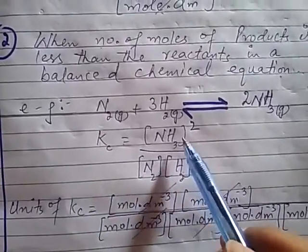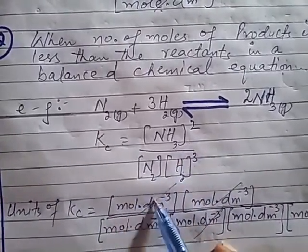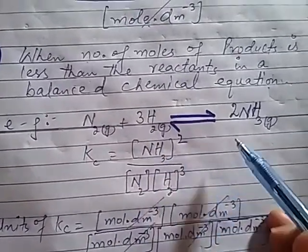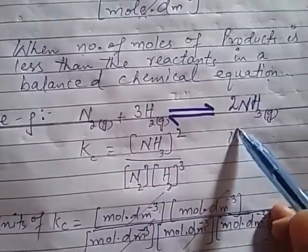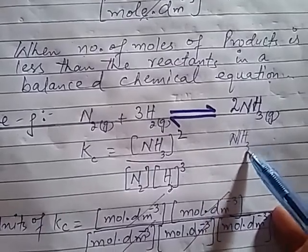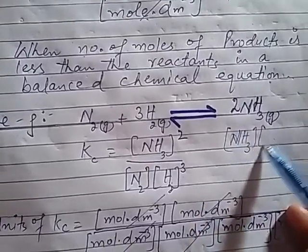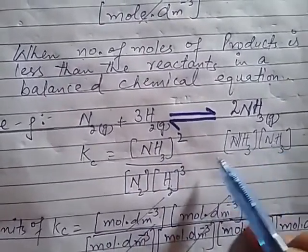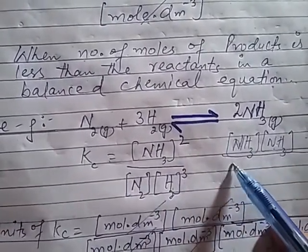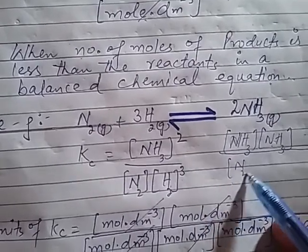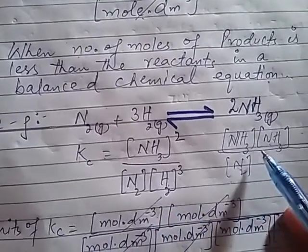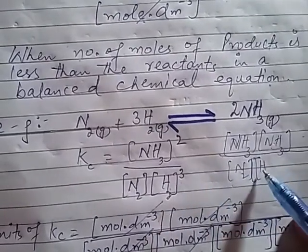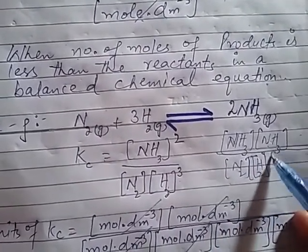Now, the unit is mole per decimetre cube. Since the exponent for NH₃ is two, we can write each concentration term individually. If we expand it, we can write NH₃ × NH₃, meaning there are two NH₃ terms. If we expand the denominator, we can write N₂ — which is single, so written once — and H₂, which has an exponent of 3, written as three individual terms.